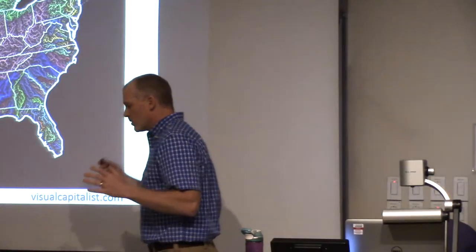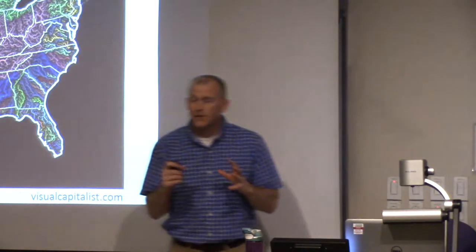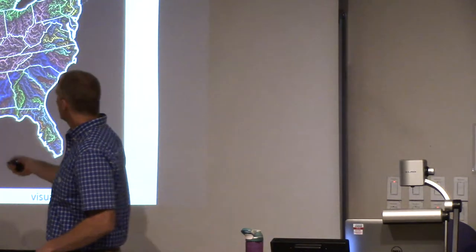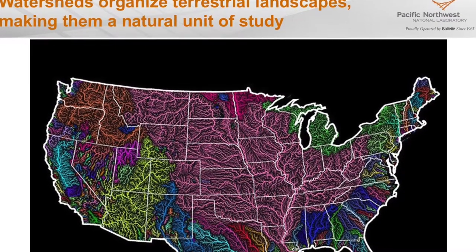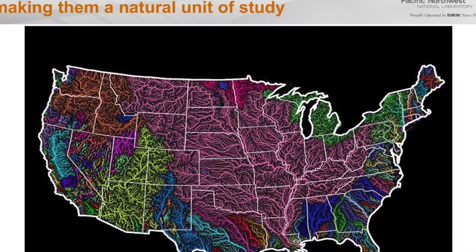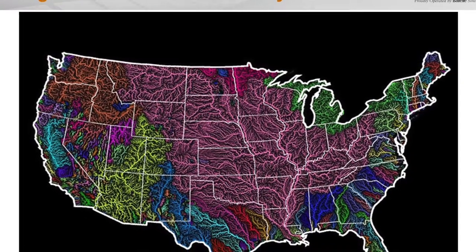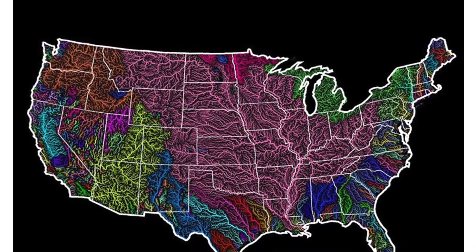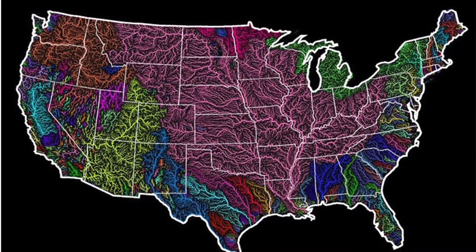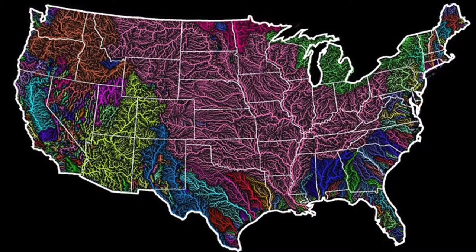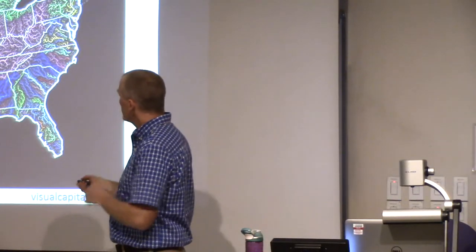River corridors are a really important component of watersheds, and watersheds themselves organize terrestrial landscapes — the Mississippi watershed, the Columbia watershed, the Colorado. The functioning of watersheds is critical for human society: they provision clean water, provide habitat for fish and other organisms, and govern the fluxes of material and energy through ecosystems. Understanding those fundamental processes and putting them into models allows scaling up from individual watersheds all the way to the global earth system.